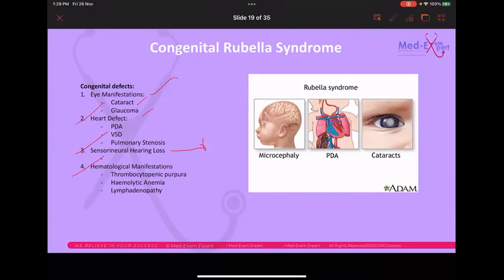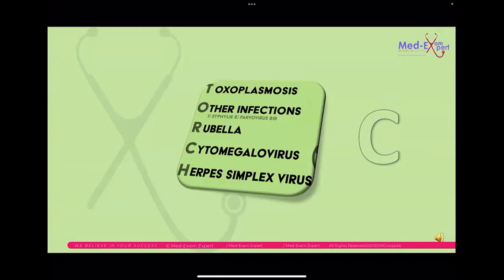Both CMV and rubella cause sensorineural hearing loss. To distinguish between them in an exam: for CMV, the scenario will not mention congenital cataracts or heart problems, and the mother is usually asymptomatic with only flu-like symptoms. Most neonates infected with CMV are asymptomatic, with only 10% showing symptoms. Rubella typically presents alongside heart defects and cataracts.